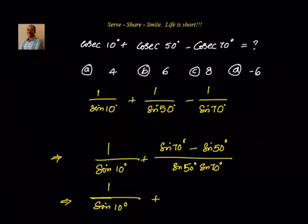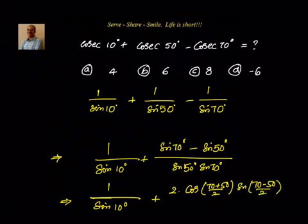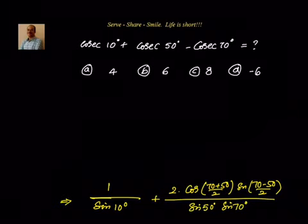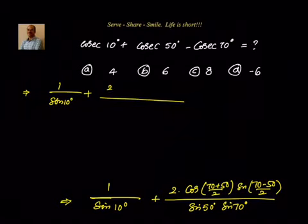The formula is 2 cos((C+D)/2) · sine((C-D)/2). So I can write down 2 cos((70+50)/2) and sine((70-50)/2) divided by what we have there. That gives us 2 into cos 60, which is 1/2, into sine((70-50)/2), which is sine 10 from the earlier step.